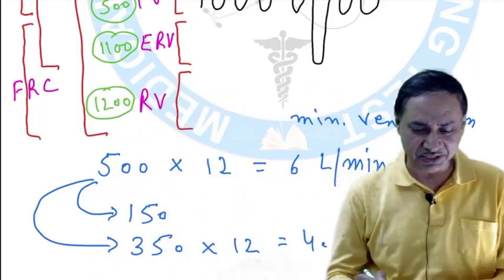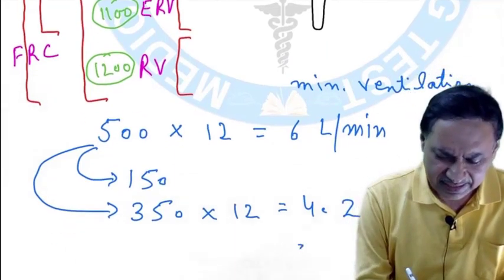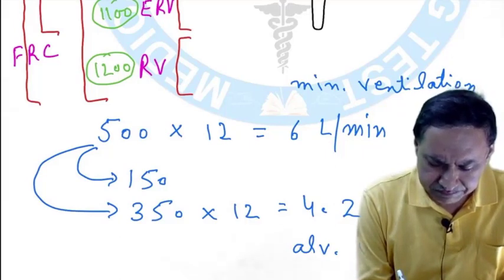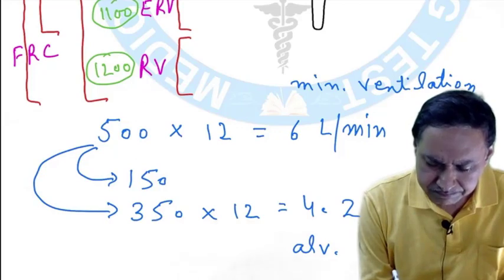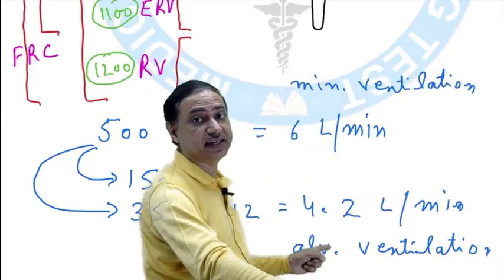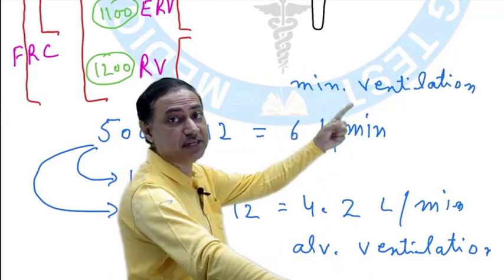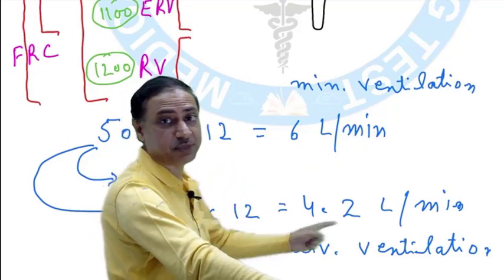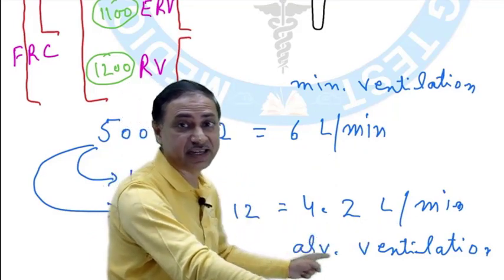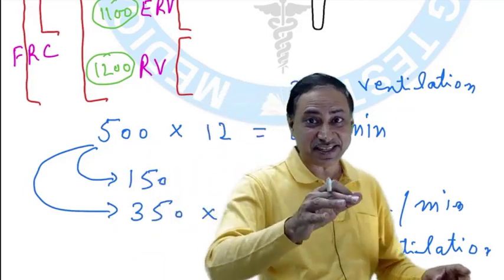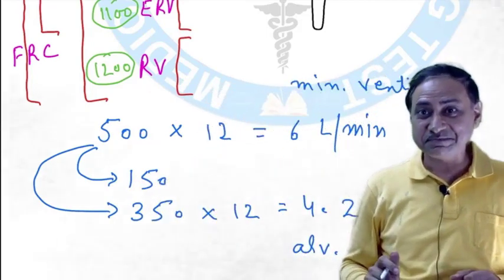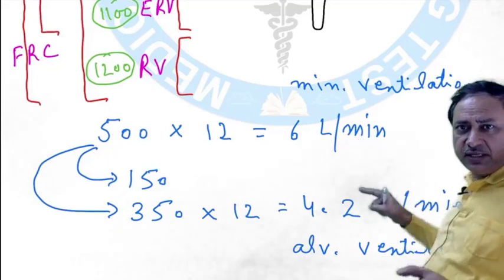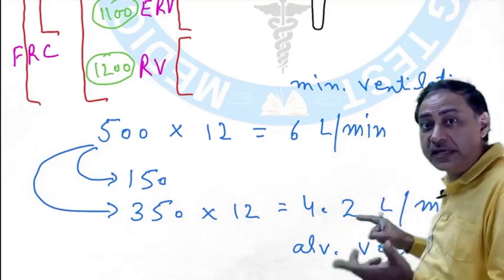What is this known as? Alveolar Ventilation — this is not Minute Ventilation. In 1 minute: 6 L per minute is Minute Ventilation. And 4.2 L per minute — what is this? This is Alveolar Ventilation. You have to subtract the dead space ventilation.